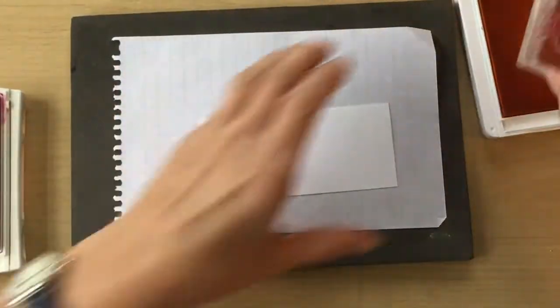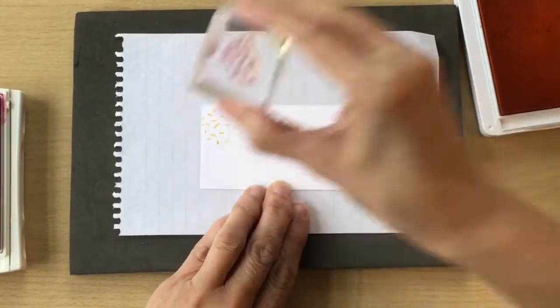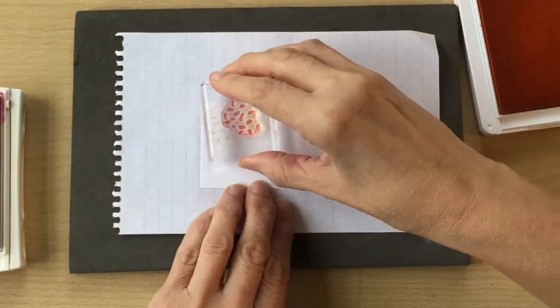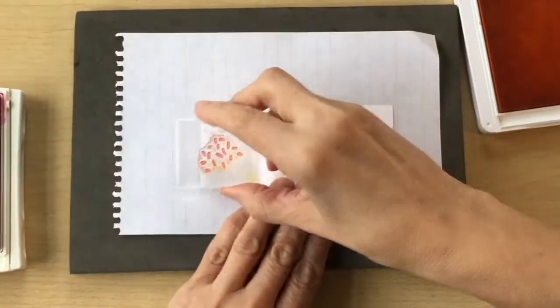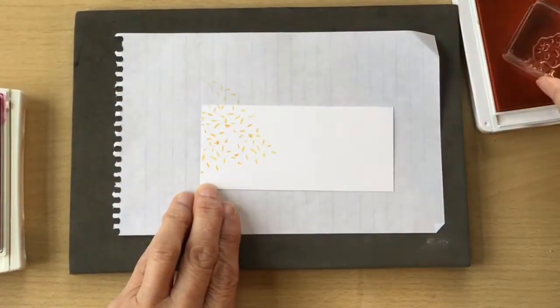We're just going to do some stamping. I'm going to start with my Mango Melody and I'm just going to stamp all over the Whisper White.